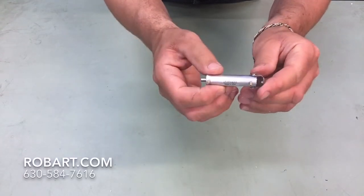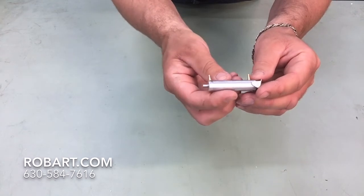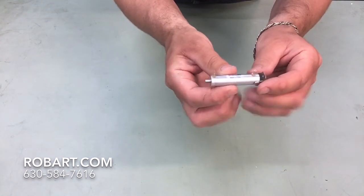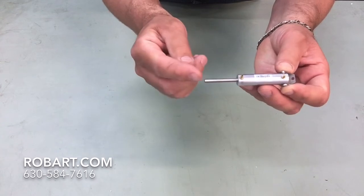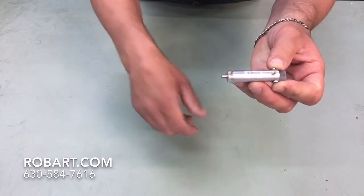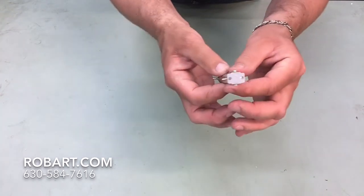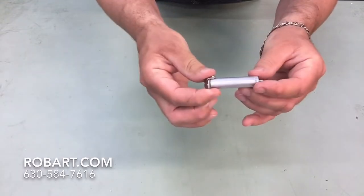So if you've got any further questions on part number 165, which is the 3/8 bore air cylinder with a 1-1/8 stroke, just give us a call at 630-584-7616.